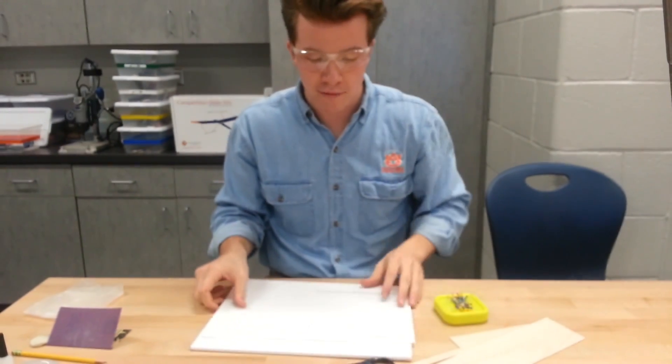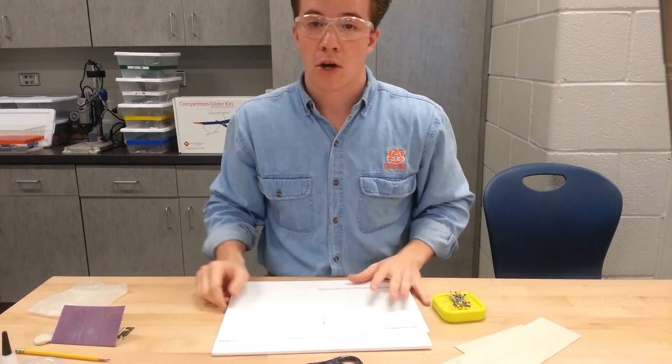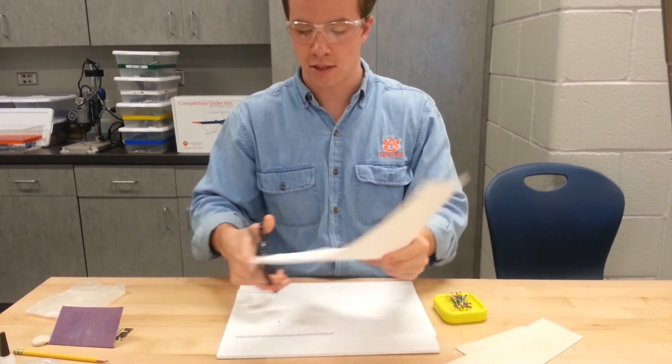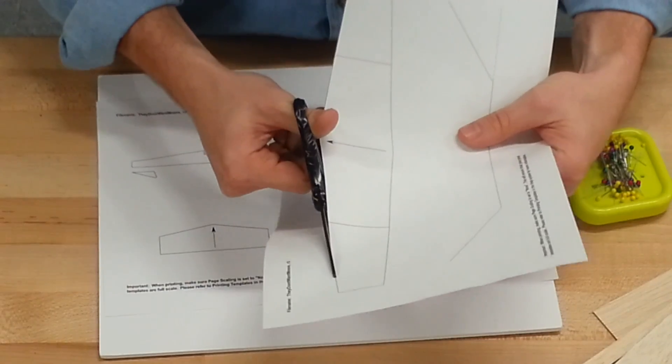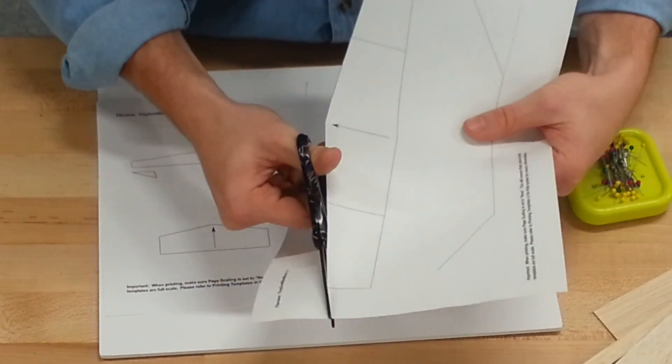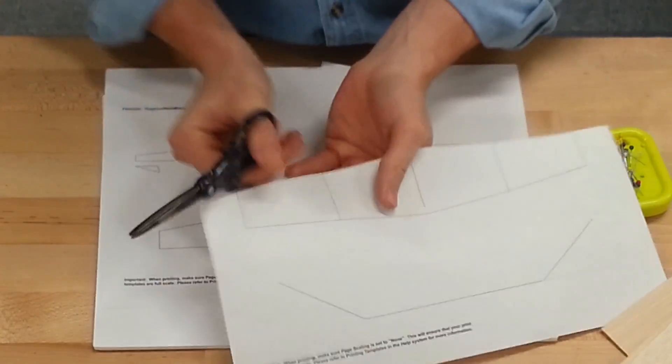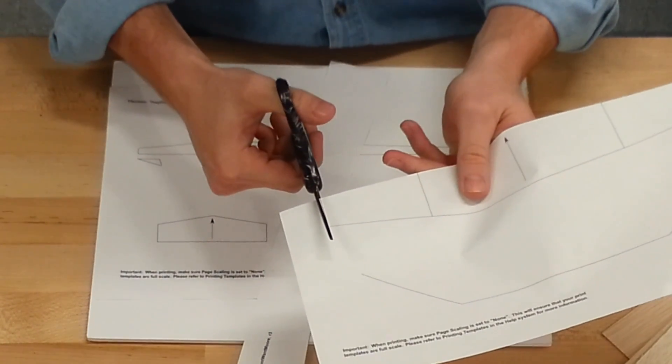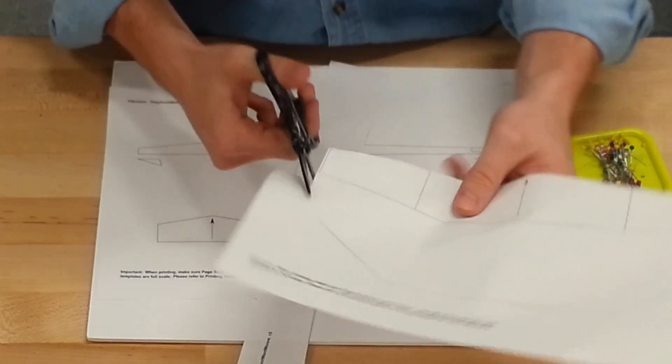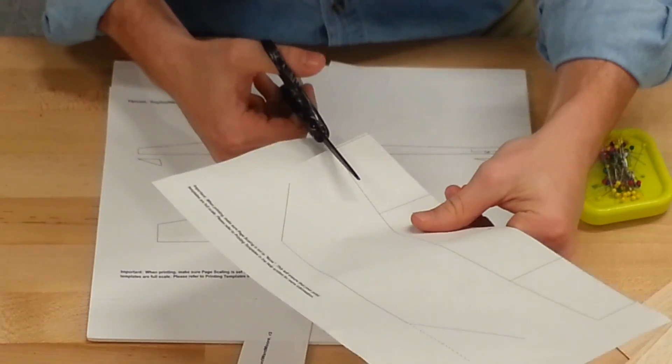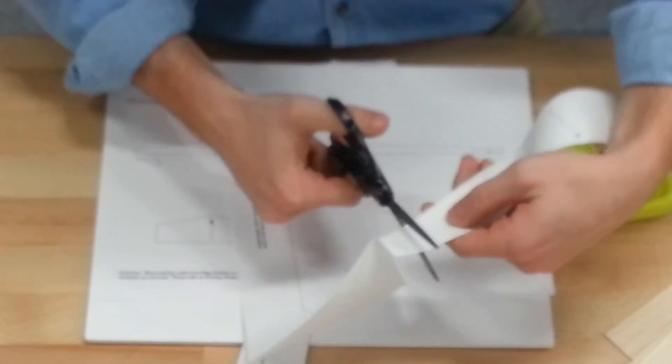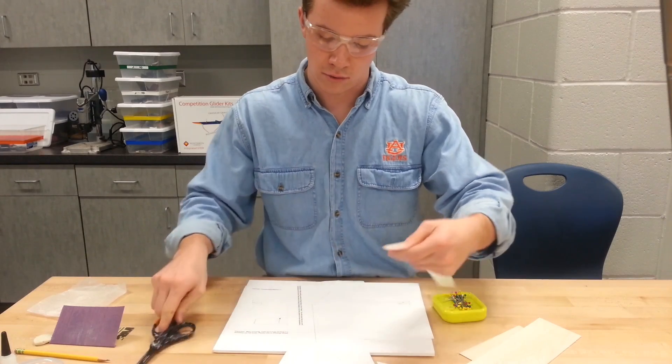So once you have your designs and everything, you're going to be ready to cut. I'm going to grab my scissors and start cutting. And it is definitely okay if you cut a little bit outside of the lines. It might even actually be preferable. That way when you're cutting with the X-Acto knife on your wood, you know exactly where you're cutting.